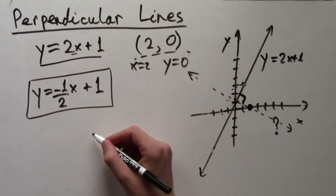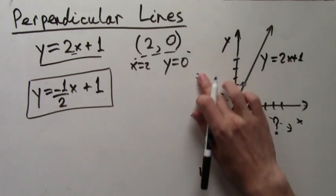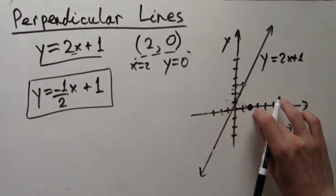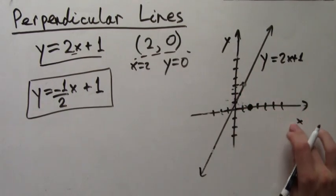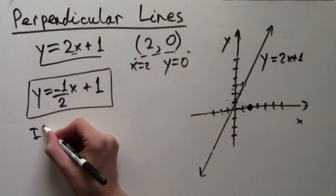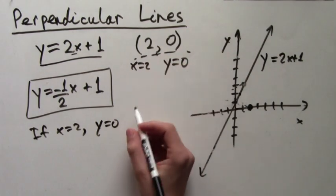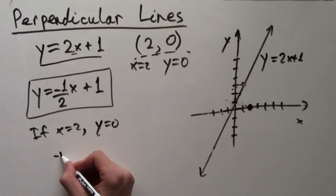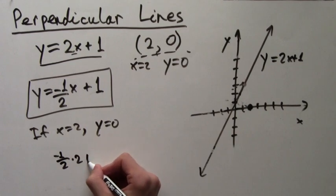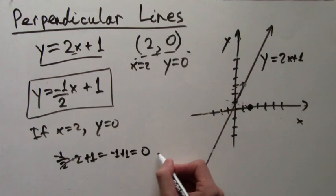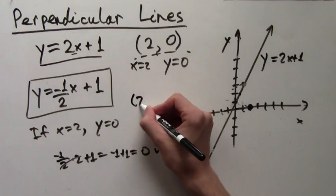So as before, we will take two points. We already know that the point (2, 0) should lie on this graph. But just to make sure, we'll plug in x equals 2 and see what y equals. So x equals 2, and we know that y equals 0, but let's just make sure: negative 1 half times 2 plus 1 equals negative 1 plus 1, which is just 0. So we have one point, and that's 2, 0.